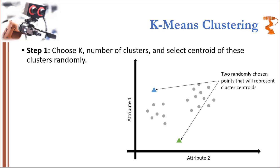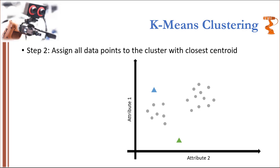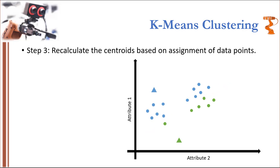We have chosen two centroids shown by blue and green triangles. The second step is to assign all data points to the cluster with the closest centroid. You calculate the distance from every data point to both centroids, and assign each data point to whichever centroid it is closest to. To do this mathematically, you draw a straight line joining the two centroids, shown as a black dashed line, and draw a perpendicular bisector shown by the red dashed line. All points above the red dashed line are nearer to the blue triangle, whereas all points below are nearer to the green triangle, so they are assigned accordingly.